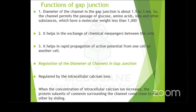The diameter of the gap junction is regulated by intracellular calcium ion concentration. Whenever intracellular calcium ion concentration increases, the six protein subunits of connexins surrounding the channel come very close to each other by sliding, thus reducing the space between cells and closing the channel.